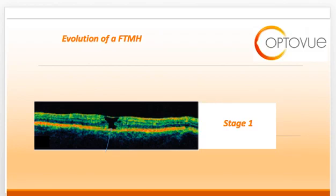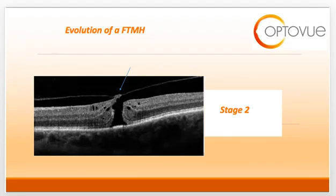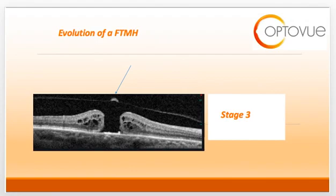A stage one full thickness macular hole shows the development of a pseudocyst formation. A stage two macular hole involves the partial opening of the pseudocyst with focal vitreous attachment — the blue arrow points to that residual vitreous attachment pulling the retina open. In a stage three hole, there is release of the vitreous traction with operculum formation. The blue arrow points to the operculum suspended or attached to the vitreous, resulting in a full thickness defect from ILM all the way to RPE. You can also see cystoid hyporeflective spaces on both the nasal and temporal sides of the fovea from chronic vitreous traction.